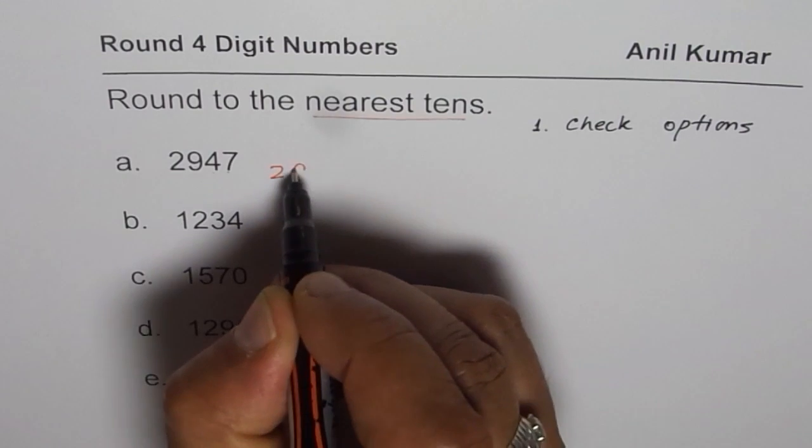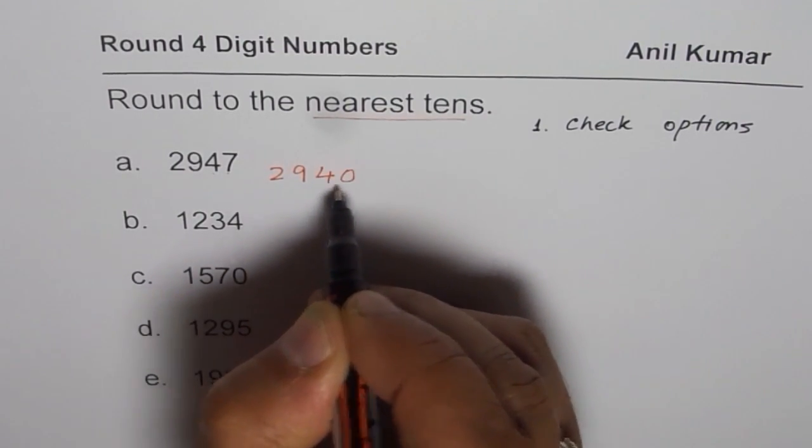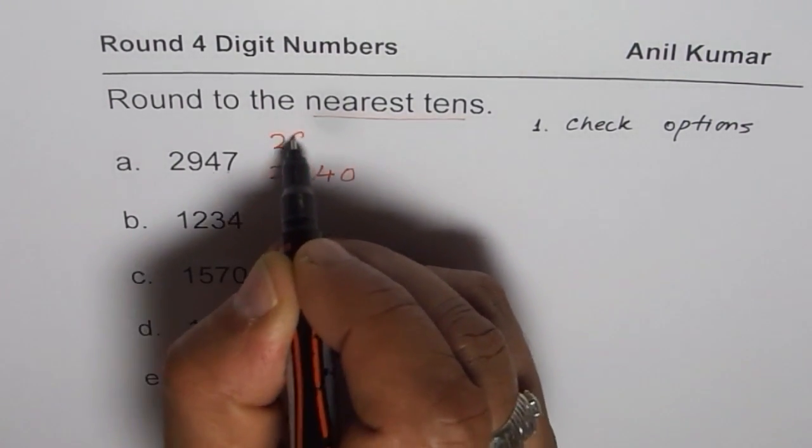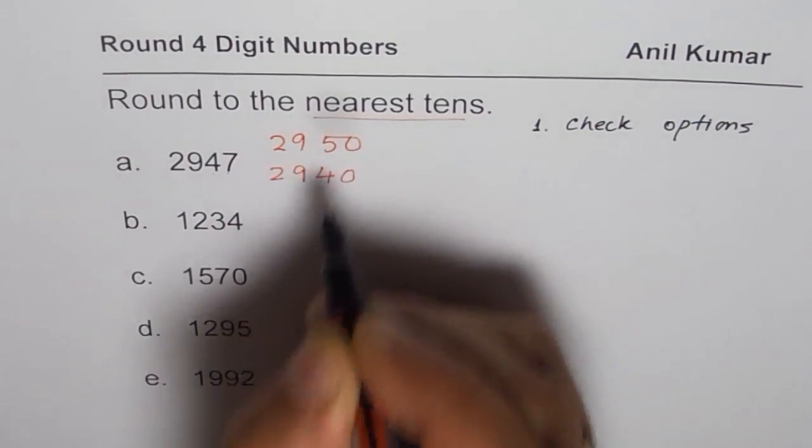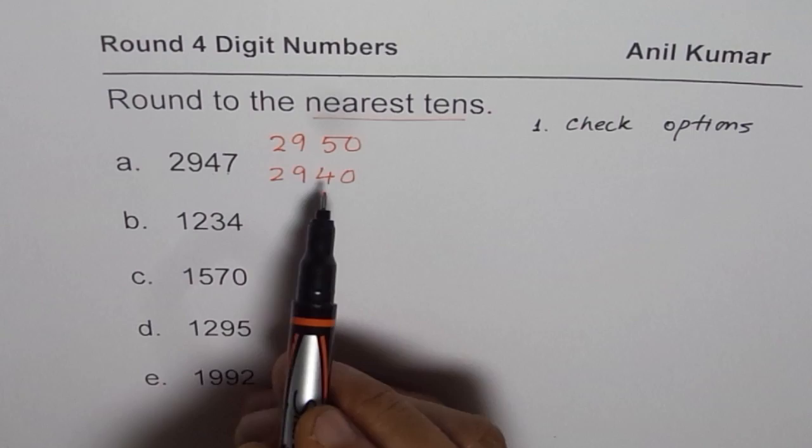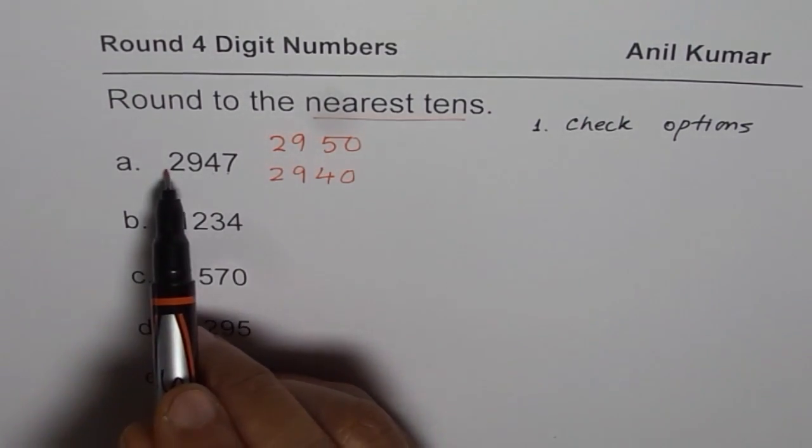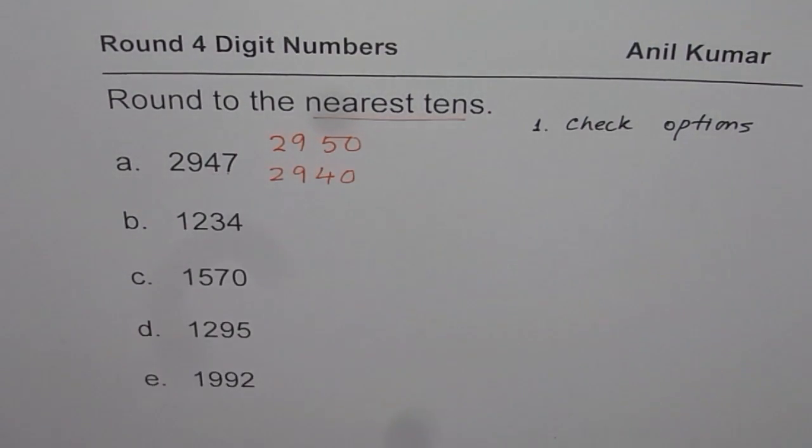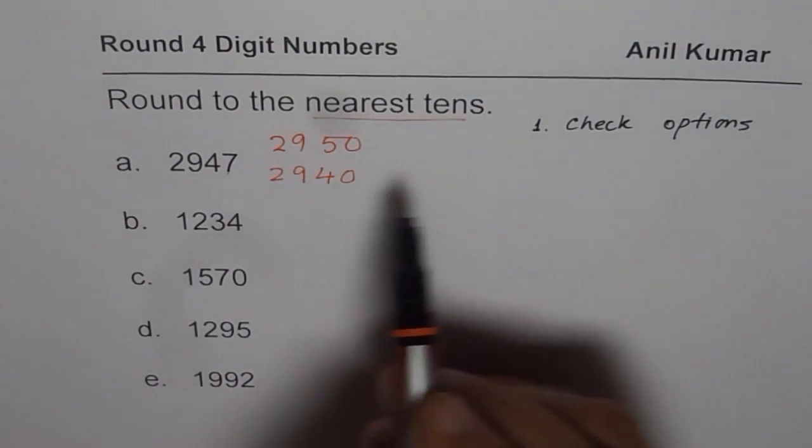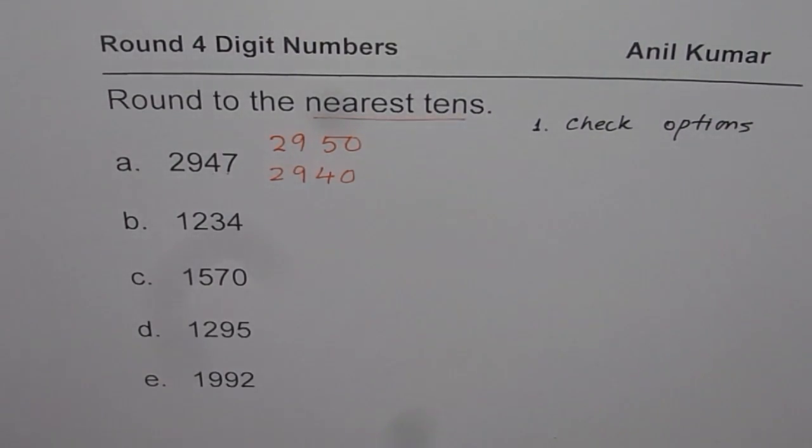Tens, 40. Or 2,950. So these are the two tens between which 2,947 comes. Check options. So these are the two options. That is step number 1.